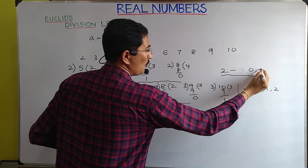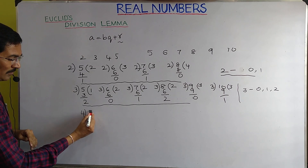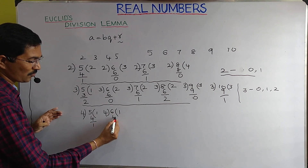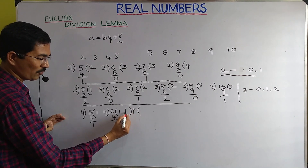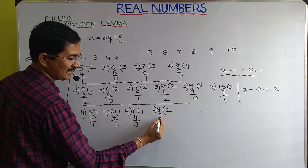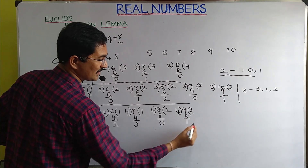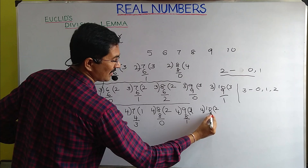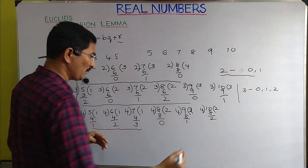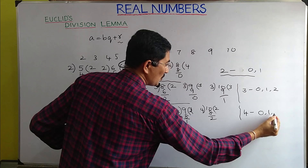Dividing by 4: 5÷4 gives remainder 1; 6÷4 gives remainder 2; 7÷4 gives remainder 3; 8÷4 gives remainder 0; 9÷4 gives remainder 1; 10÷4 gives remainder 2. The remainders cycle through 1, 2, 3, 0, 1, 2, 3, 0 — so when dividing by 4, the remainders are 0, 1, 2, or 3.